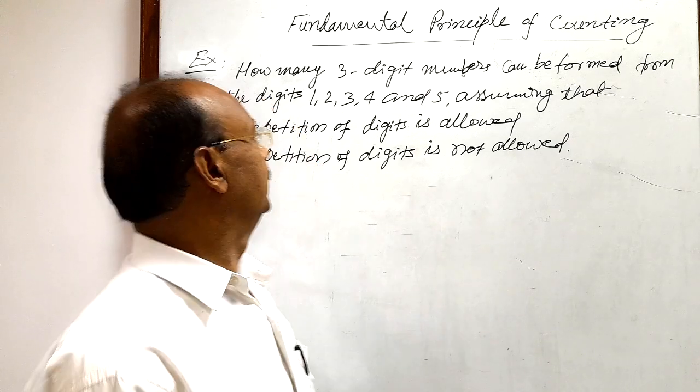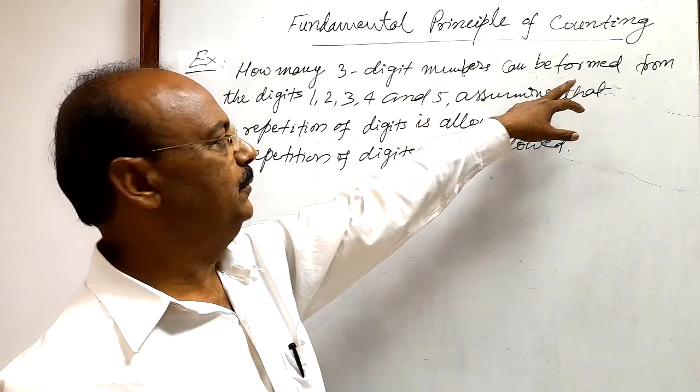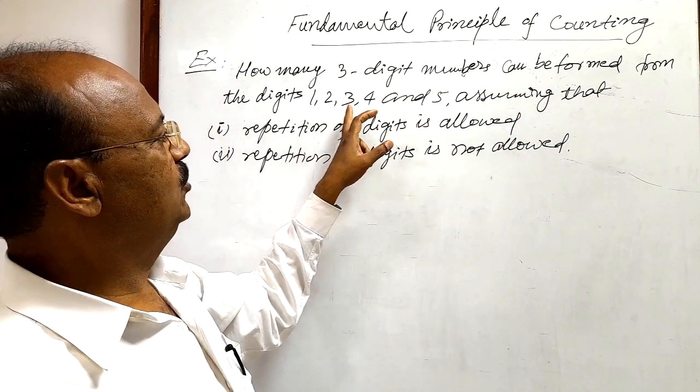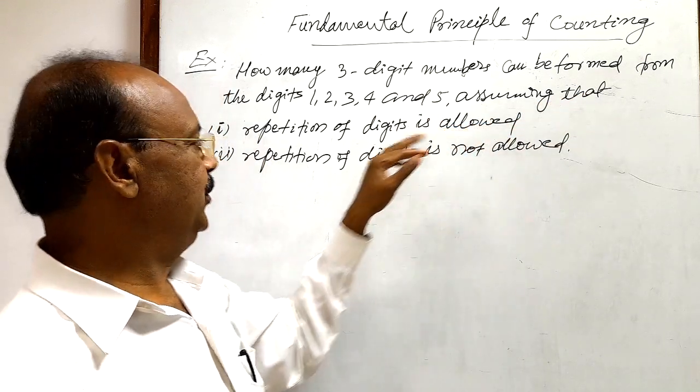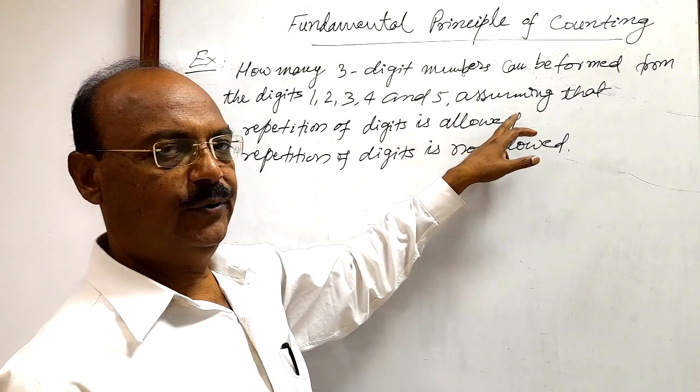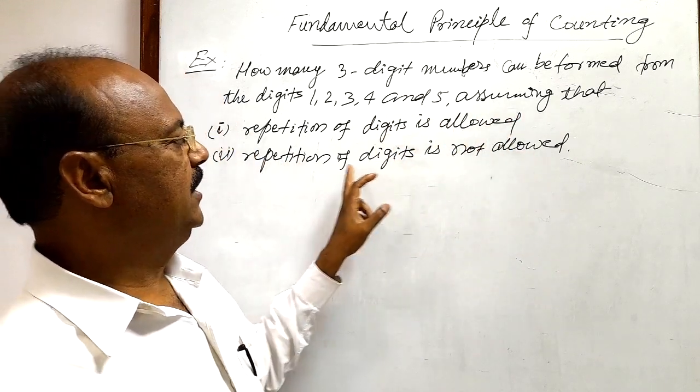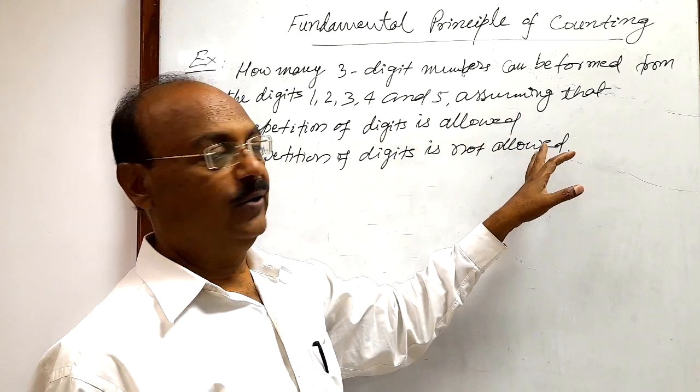So here the question is: how many three digit numbers can be formed from the digits 1, 2, 3, 4, and 5, assuming that there are two parts of the question? In the first part, repetition of digits is allowed, and in the second part, repetition of digits is not allowed.